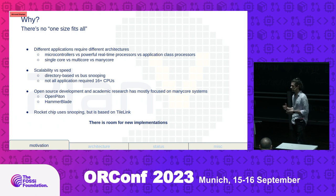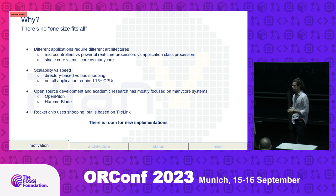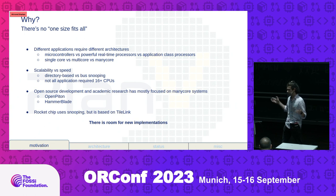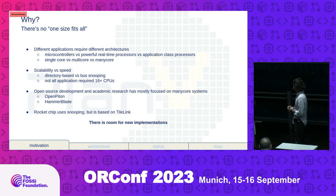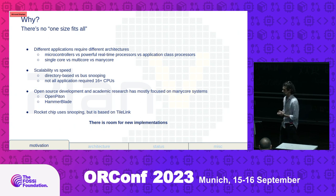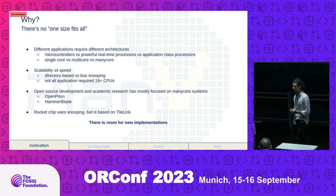In the open source world, what we've seen recently is there has been a lot of interest, especially from academic research, to develop systems targeting many cores. We have, for example, OpenPiton and the PULP framework, and we have OpenBlade, which are targeting especially systems that are clusters with high numbers of CPUs. We think there is room for new implementations and there is interest also from industry.